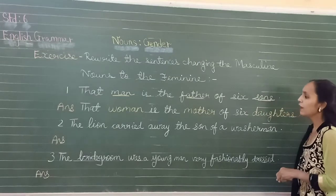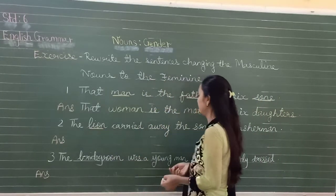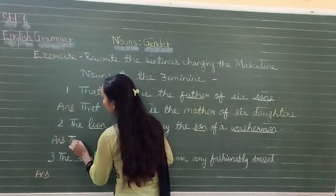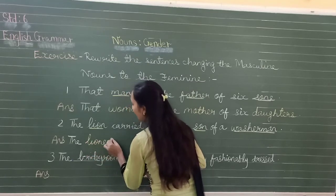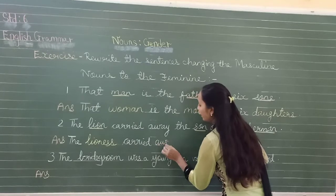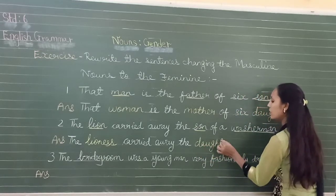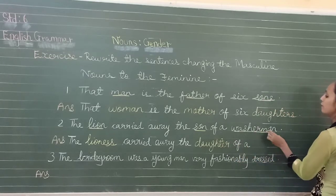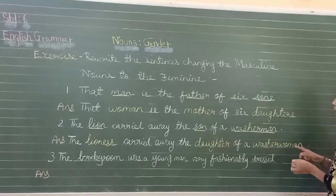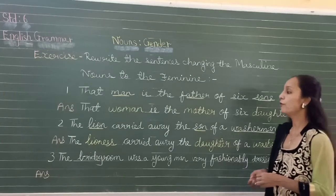'The lion carried away the son of a washerman.' The masculine nouns are lion, son, and washerman. Lion becomes lioness — add E double S. Son changes to daughter. Washerman changes to washerwoman — M-A-N changes to woman. So: 'The lioness carried away the daughter of a washerwoman.'